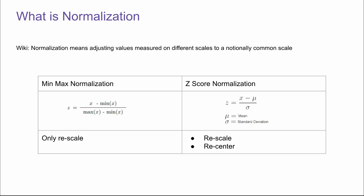If you Google normalization, most likely you are going to see two common ways of doing normalization. The first one is called min-max normalization, where the numerator is x minus minimum of x, and the denominator is maximum of x minus minimum of x. So in this way, we can do a rescale for the value x. The next one is called z-score normalization, which is doing not only rescale but also recenter.